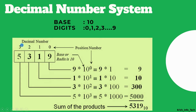This is how a decimal number looks — for example 5, 3, 1, 9. The base is 10. As it is a positional number system, we give positions: 0, 1, 2, 3 — representing the 1's place, 10's place, 100's place. The position value starts from 0. For calculating, the digit 9 is multiplied by 10 to the power of 0, where 10 is the base and 0 is the position used as a power.